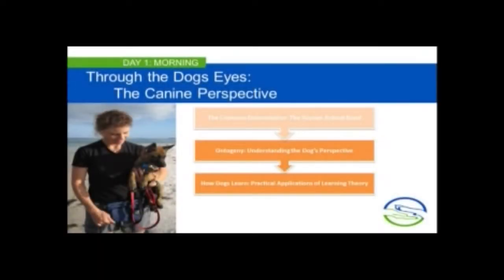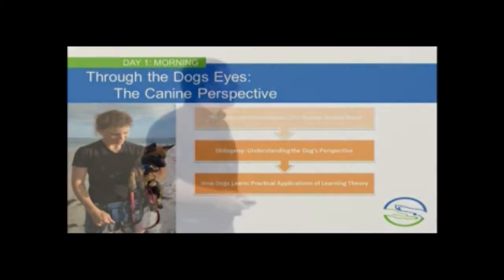We're going to look through the dog's eyes and get a better understanding of the canine perspective. I'm going to talk about ontogeny so you get a better idea of where dogs came from, and we want to really understand the dog's perspective, knowing where they came from and where they are today. Then I'm going to talk about how dogs learn and give you some practical applications to learning theory.